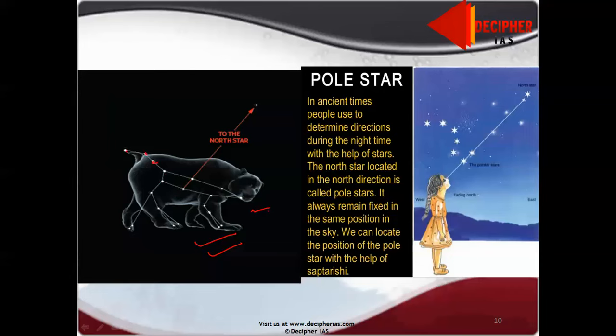I will show you where is Saptarishi. One, two, three, four, five, six, seven. This is Saptarishi and these seven star poles always point in the direction of pole star. And this whole including the Saptarishi is Big Bear.